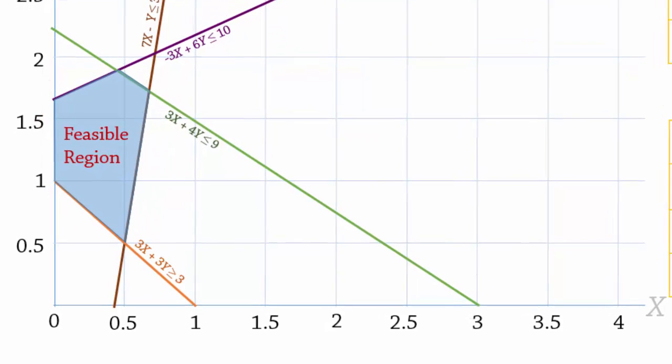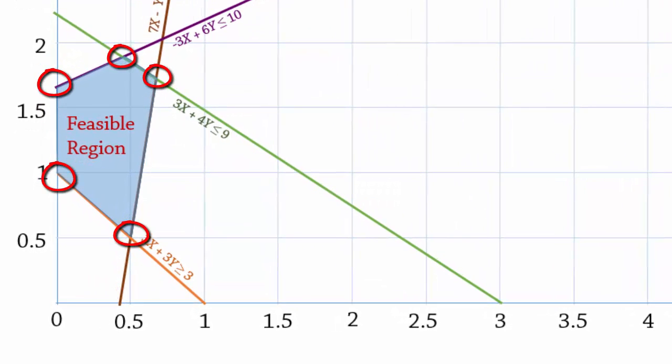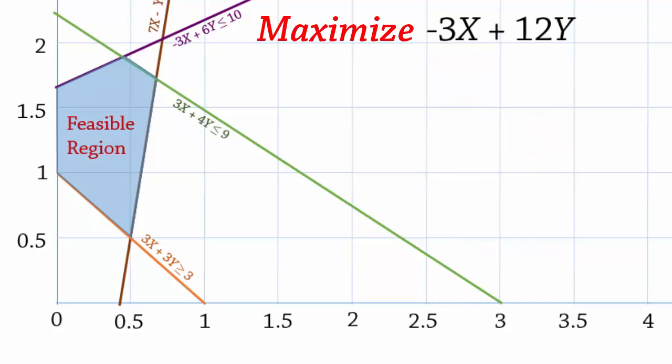To determine which of the extreme points of this feasible region is optimal, let's use the objective function line method. The objective function is to maximize negative 3x plus 12y. We begin by setting the objective function to any number of our choice. Normally, I would just multiply 3 by 12, but that would give us 36, which would give us a line too far away from the feasible region. But since 12 is a multiple of 3, it would be a better choice in this case. So let's set the objective function equal to 12.